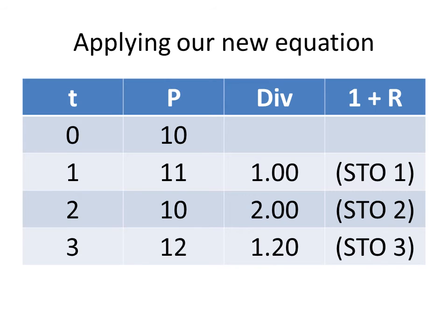Finally, we need to find the return between time 2 and time 3. We're going to do exactly the same as we've been doing. We're going to take the price at time 3 of 12, add the dividend at time 3 of $1.20. That gives us 13.20.